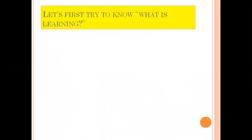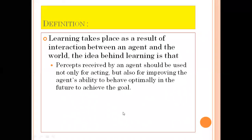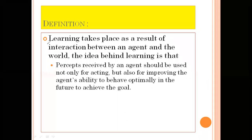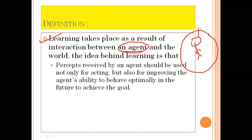First, we have to know what is learning. Learning takes place as a result of interaction between an agent and the world. Agent is the one in artificial intelligence — agent tries to collect information from the environment, tries to collect information from the surrounding. And based on that information, it performs some action.